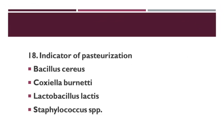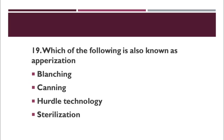The indicator of pasteurization: Mycobacterium tuberculosis is used as the indicator of pasteurization. Next question: which of the following is also known as appertization? Option A: blanching. Option B: canning. Option C: hurdle technology. Option D: sterilization. Correct answer is canning. Canning is also known as appertization, named after Nicolas Appert.